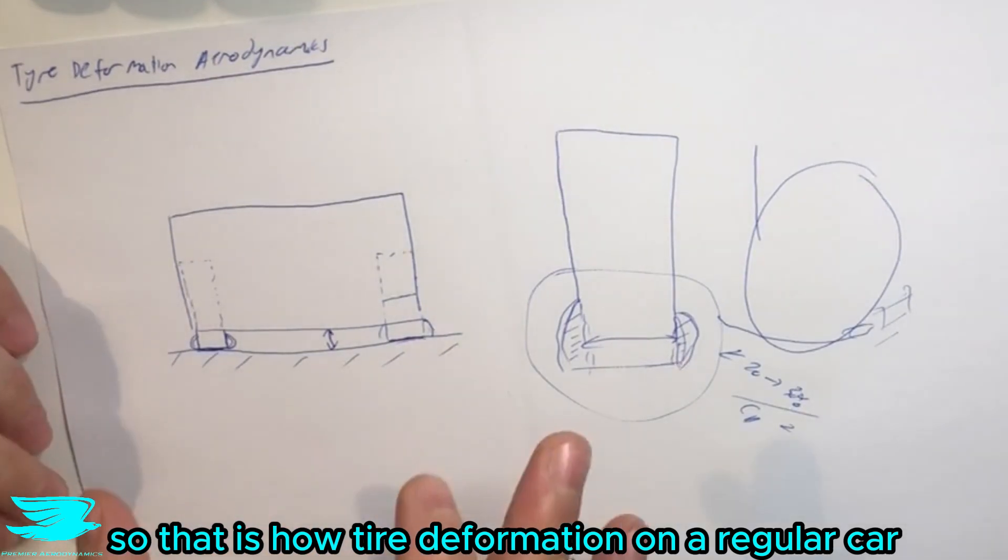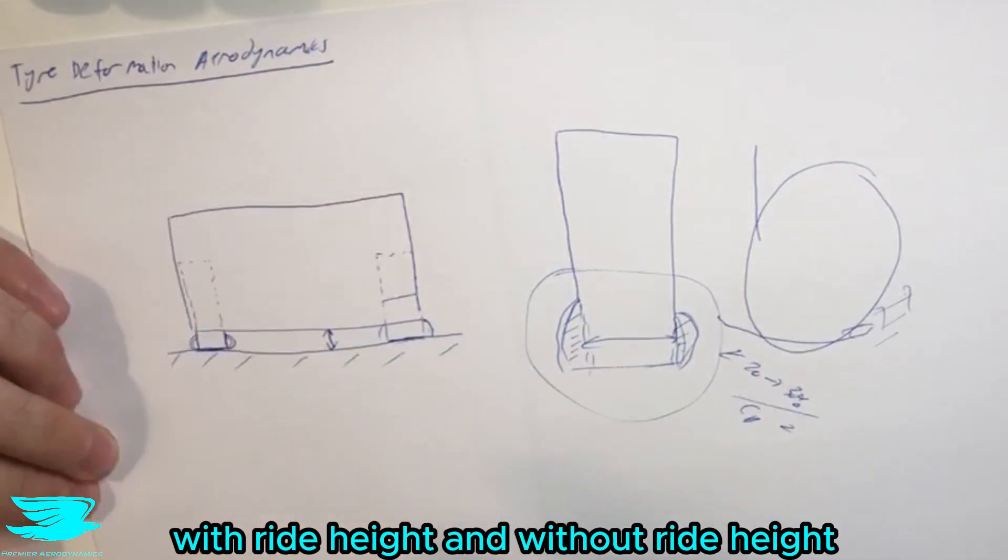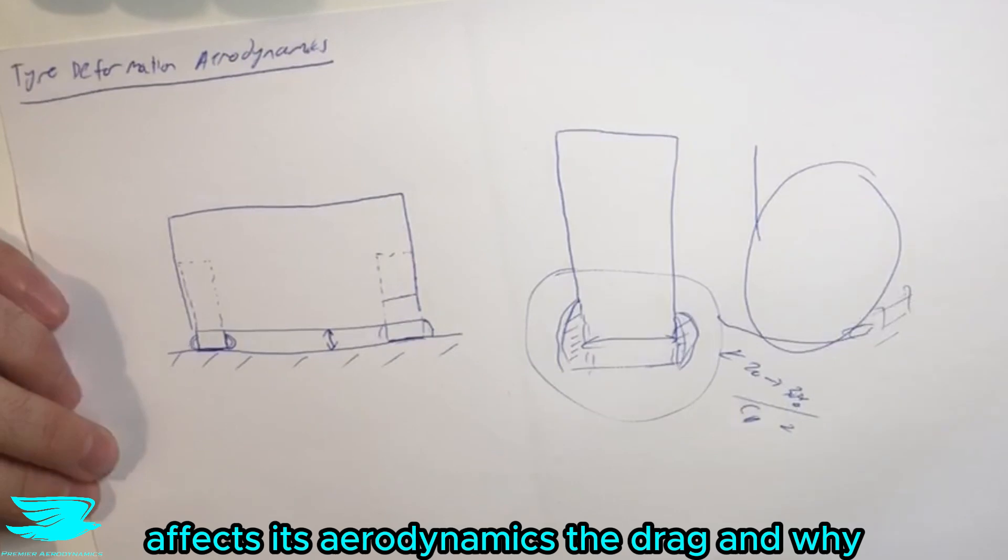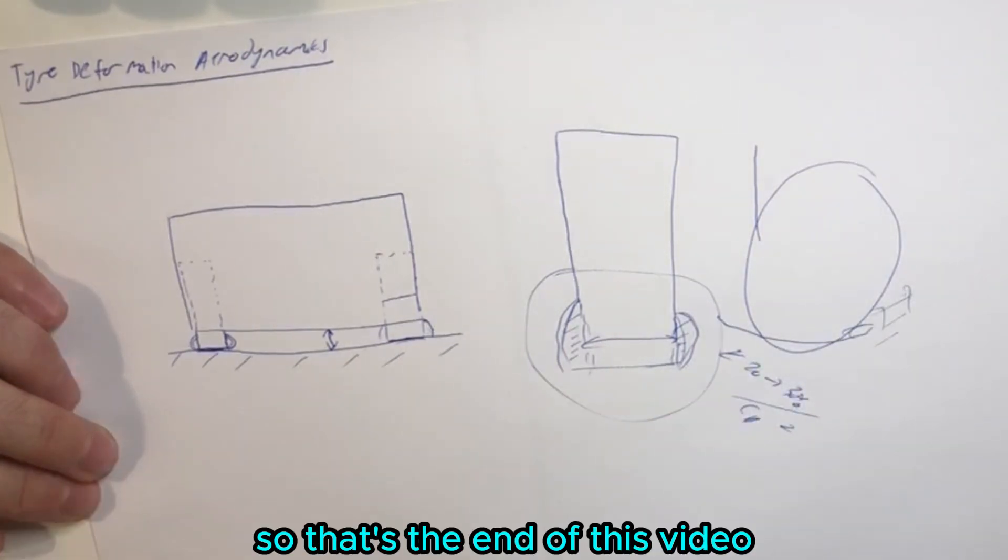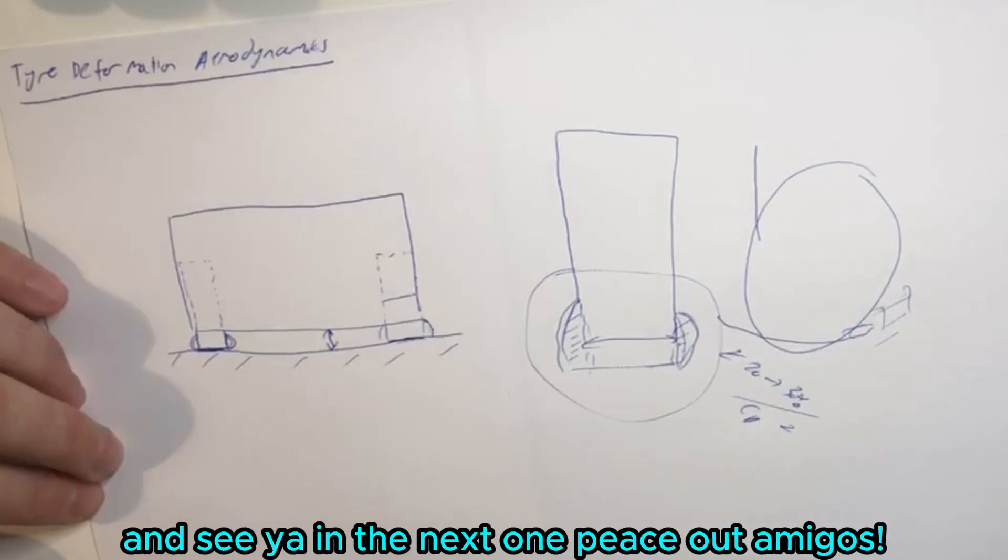So that is how tire deformation on a regular car, with ride height and without ride height, affects its aerodynamics—the drag coefficient and why. On this video, make sure to like and click the subscribe button, and let's see you soon. Peace, amigos.